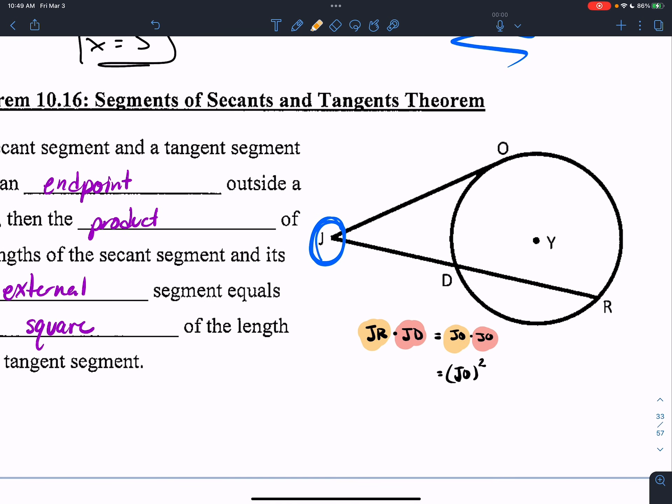So what it is, is once again, take the whole thing. Y'all, you're going to erase this just so we can be clear. Take the whole thing, take J-O, and multiply it by the outside part. The big difference for this one is that J-O is the whole thing, and it is the outside part.